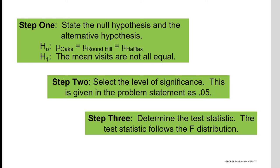In the second step, a decision is made about the level of significance, and in this study it is set at 0.05. Finally, in the third step, one needs to decide what type of test statistic to use. Since there are three averages, the best tool is the F-distribution, and thus the F-test statistic should be used.